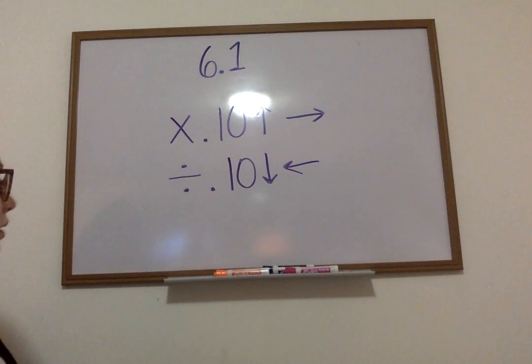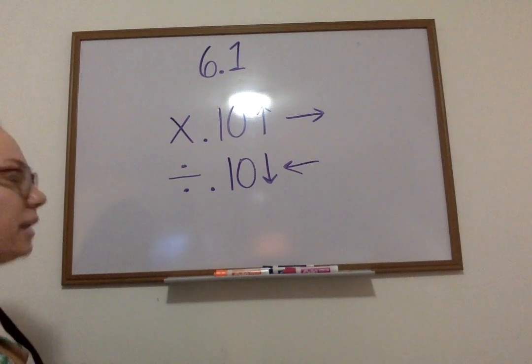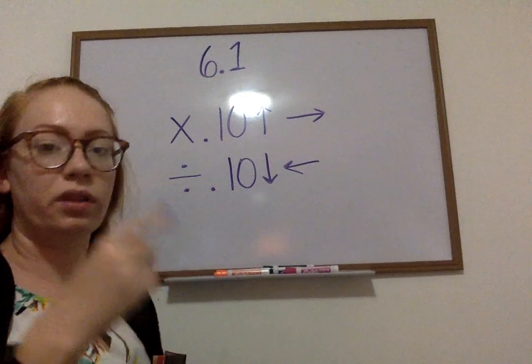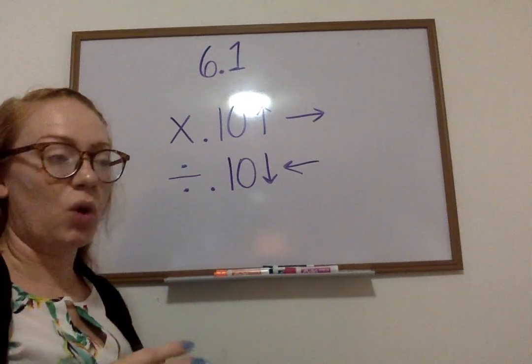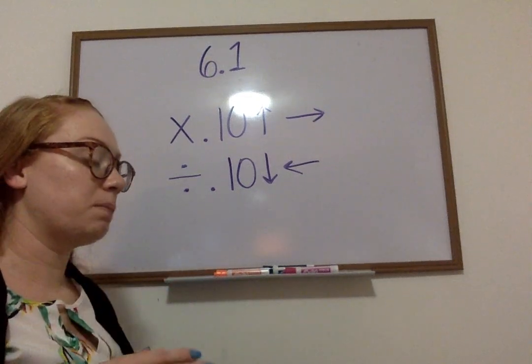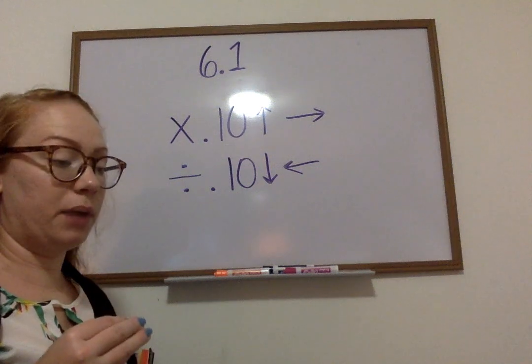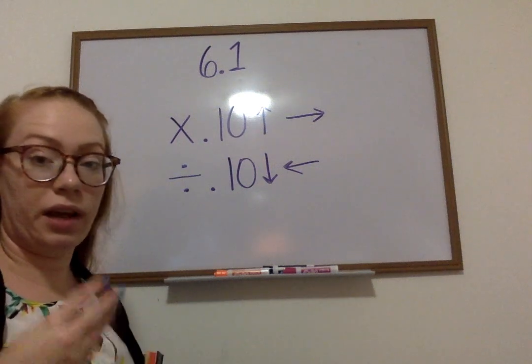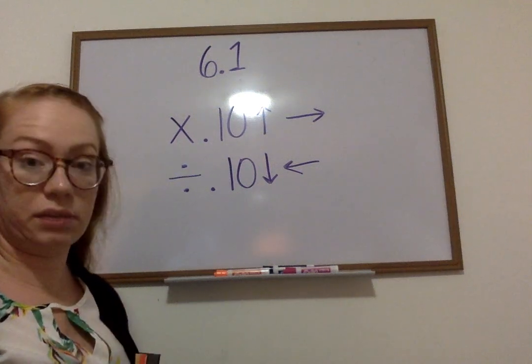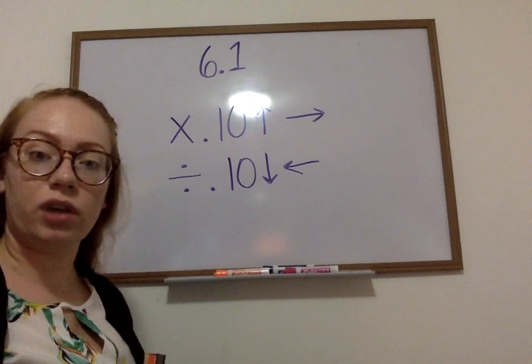Now, anytime you see you're dividing, and you're dividing by 10 to the 4th, 5th, 6th, whatever power, or if you see a decimal divided by 10, 100, 1000, 100,000, something like that, then you can use this trick also.